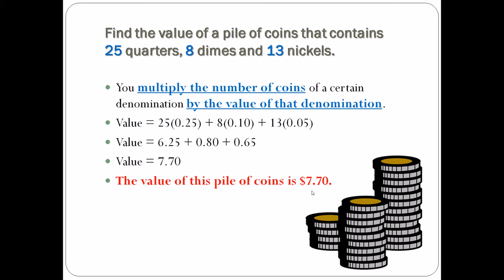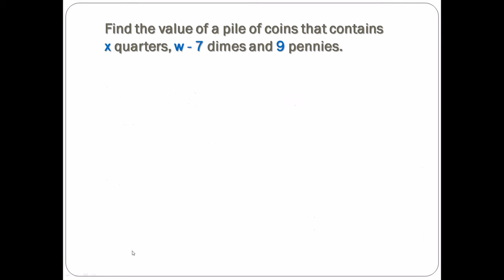But when you get to exercise B, something changes. It looks like they've made typos all over the page. Find the value of coins of a pile of coins that contains x quarters, w minus seven dimes, and nine pennies.